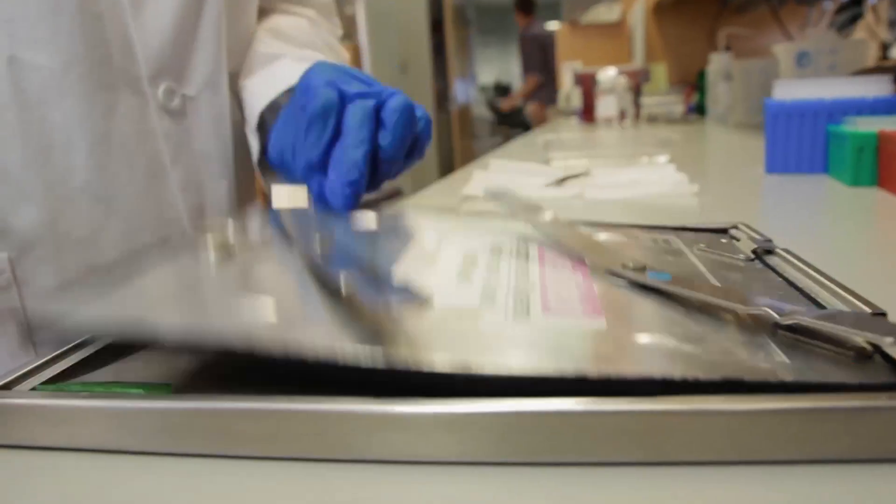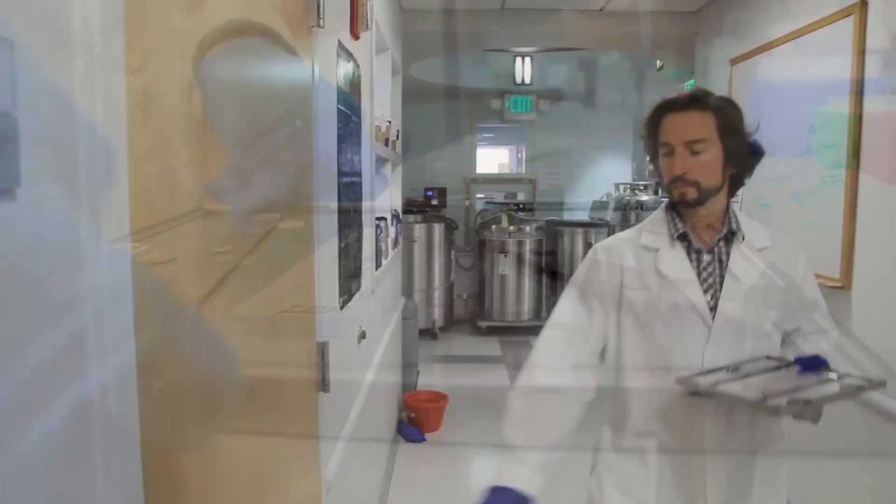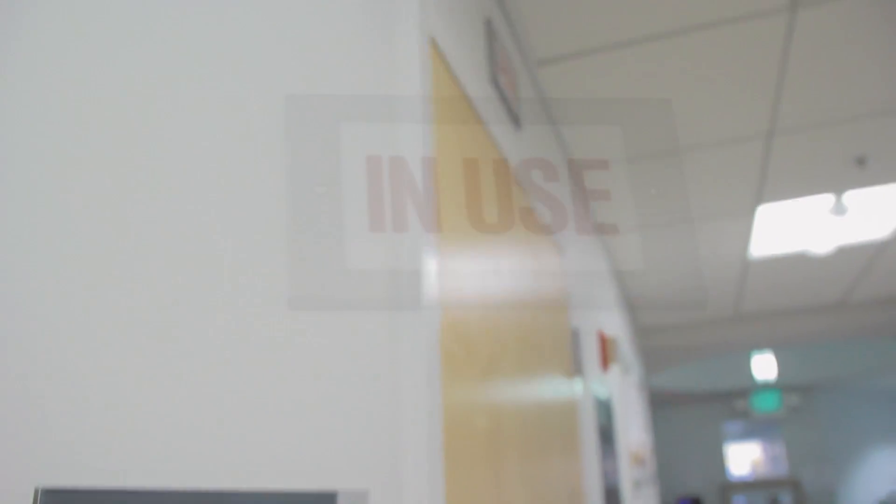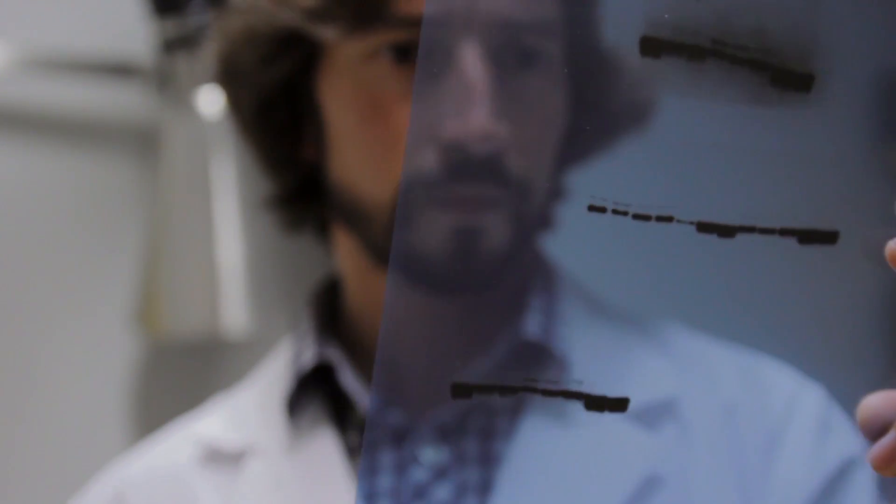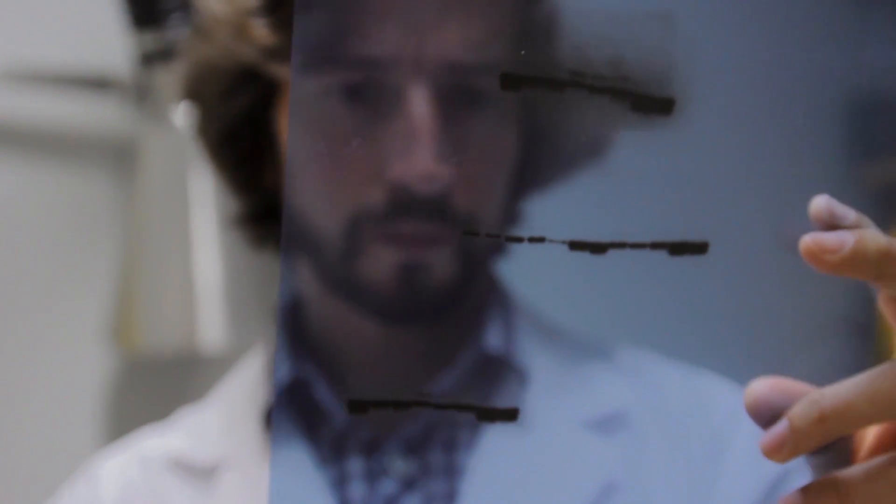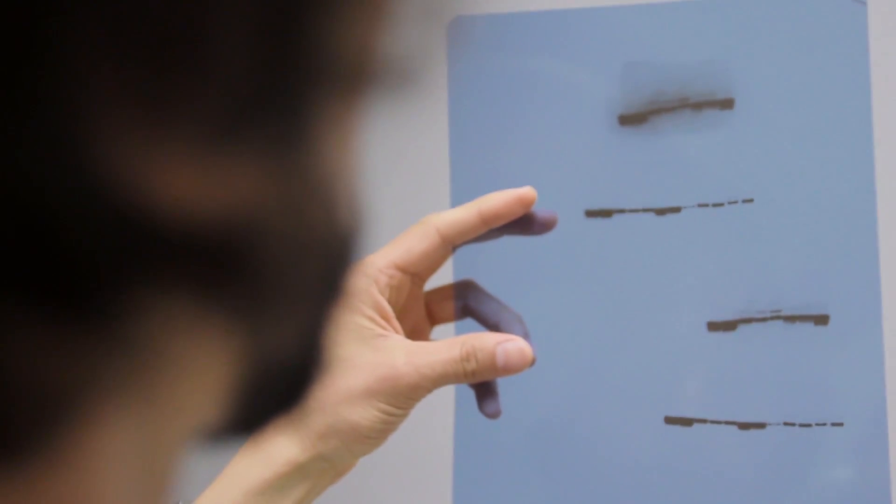One of the challenges with developing film to analyze the Western blot was having a very strong band next to a very faint band, wasting time with the film, exposing different films until you get the right image. And the problem was that it wasn't enough, or it was too much, or too much background.